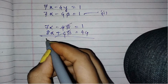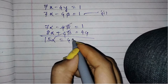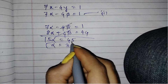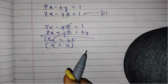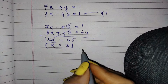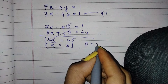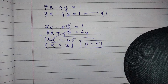Since 4β terms will cancel, we can directly add the equations. So 15α = 45, giving α = 3. Substituting into one of the equations, we find β = 5. So α = 3 and β = 5, meaning C = (3, 5).